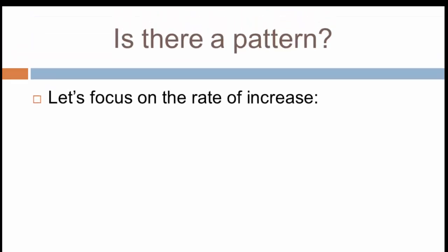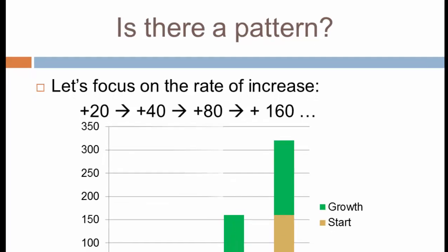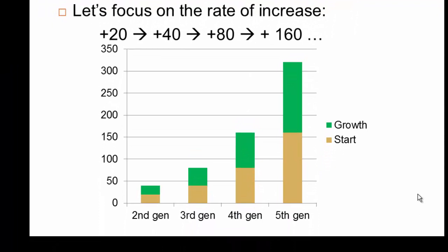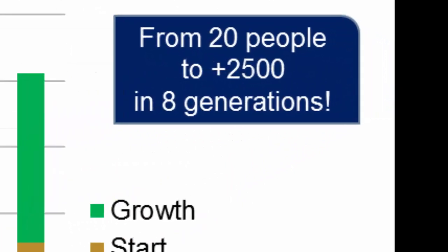The pattern is clear: from generation one to two we added 20, from two to three we added 40, from three to four we added 80, and from four to five we added 160. This is just going to continue, and when we chart it out we can see this is not simple growth — this is exponential growth. Following this out to eight generations, we go from just 20 people at the start to over 2,500 in just eight generations.